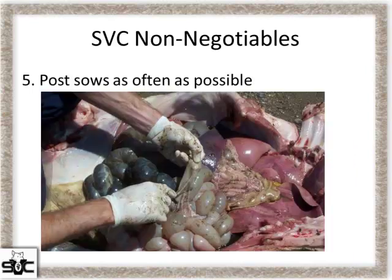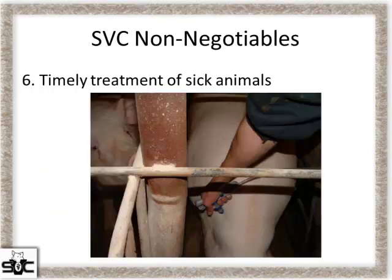Number five: post sows as often as possible. For us this is a big area — a lot of those girls go out the door as unknowns, and you can gain a lot of information from posting. That information can be used as training opportunities for your farm staff and to really dial in on what's going on at your farm and how to fix it. Number six: timely treatment of sick animals — it's a must on every farm.